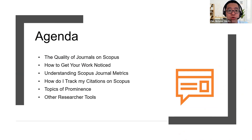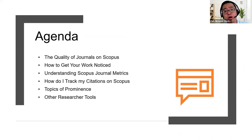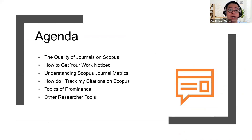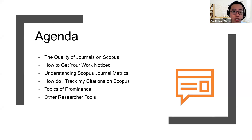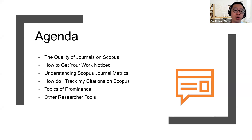In today's session, I'll be walking you through these key topics. First, I'll do a brief introduction on the quality of journals on Scopus. I'll be walking you through on how and what you should do to get your work noticed and how you can get it published. The next couple of sections will be a bit drier because we'll be talking about metrics. I'll also be talking you through on how you can understand Scopus journal metrics, how you can track your citations on Scopus, and I'll be sharing some interesting things like topics of prominence and other research tools.